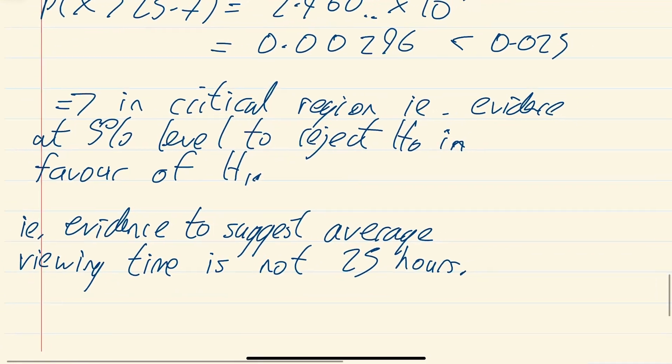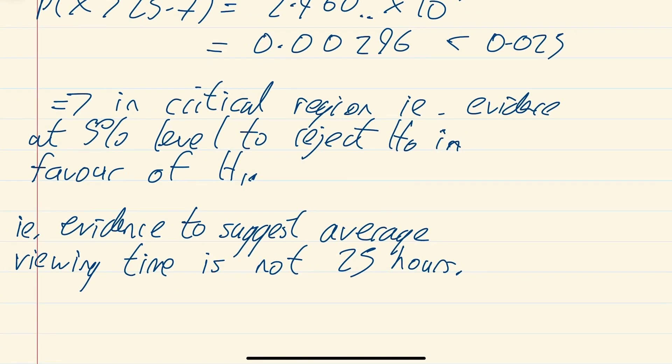You just write your spiel at the end. It says in the critical region, i.e. evidence at 5% level to reject H0 in favor of H1. And then write it back in context of the question: i.e. evidence to suggest average viewing time is not 25 hours. And that is it. Done.